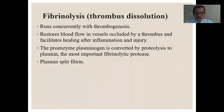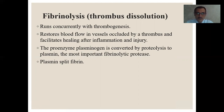After formation, the thrombus may undergo dissolution — which we call fibrinolysis. In the body we have the coagulation and its antagonist — the anticoagulative system — and the fibrinolytic system. The fibrinolytic system, running concurrently with thrombogenesis, restores blood flow to vessels occluded by thrombus and facilitates healing after inflammation and injury. The proenzyme plasminogen is converted by proteolysis to plasmin — the important fibrinolytic protease. Plasmin splits fibrin.